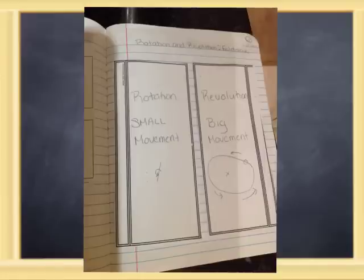If you notice, I put new things on the fronts of the foldable. Let's start off with the rotation tab. I wrote down small movement and I drew a picture. When I talk about small movement and talking about that object that is spinning...